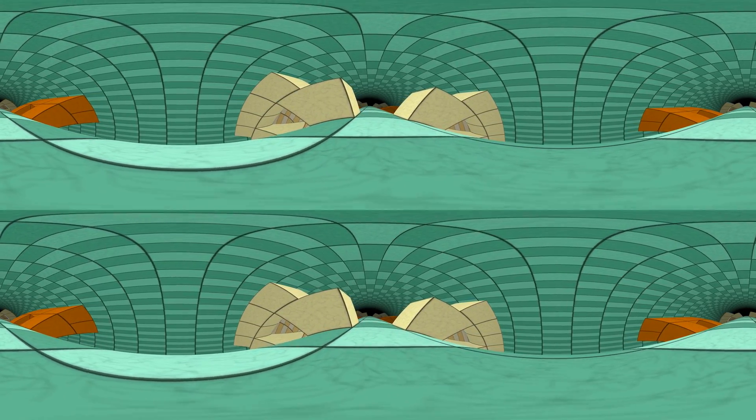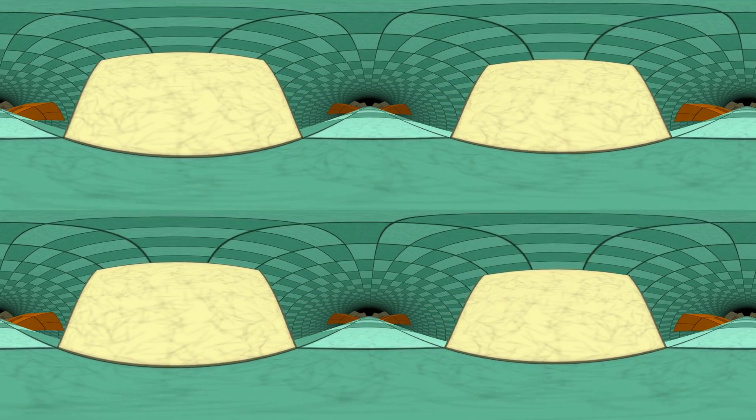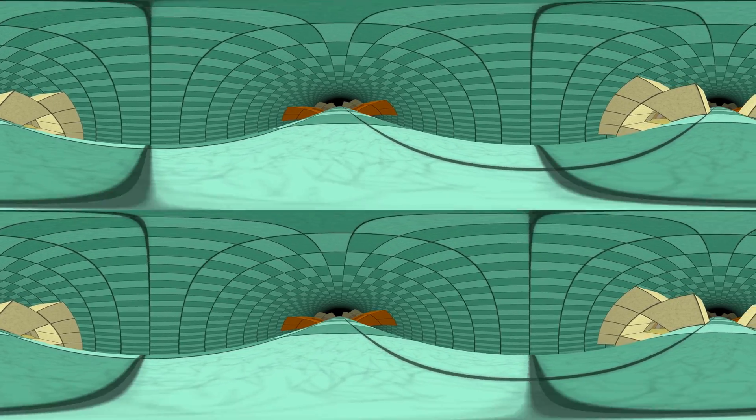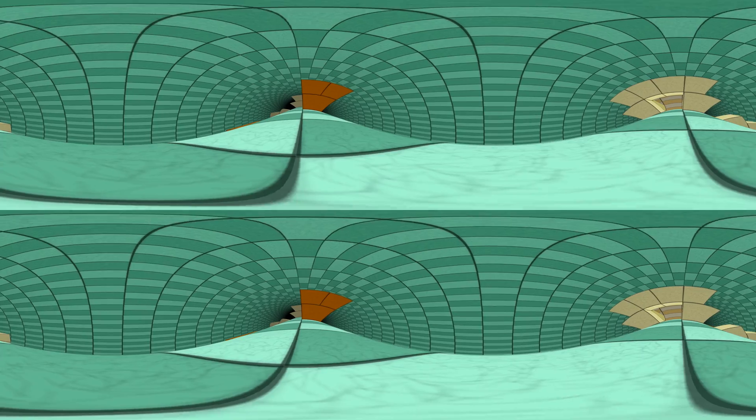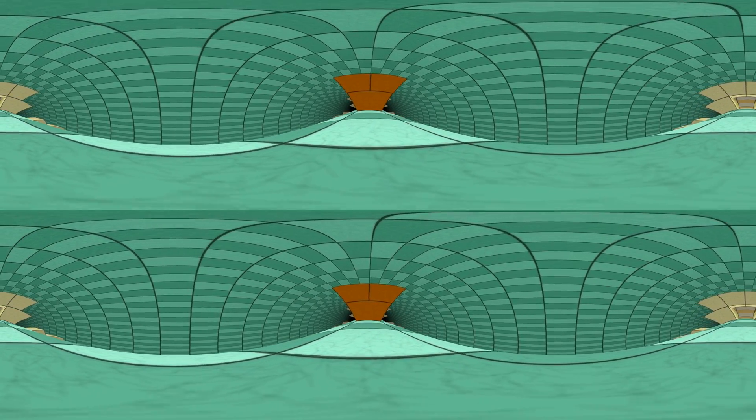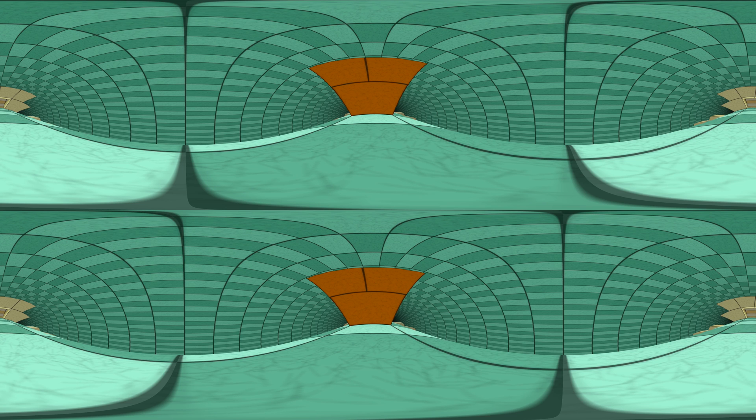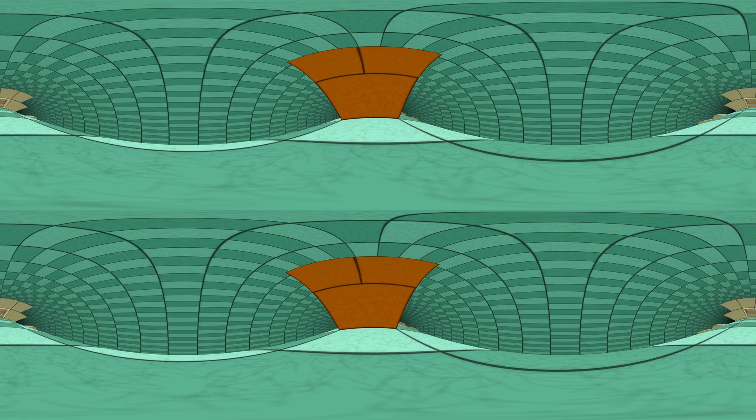Sorry, no pentagons this time. Have curved squares instead. Look at the side walls of these portals. They consist of three curved squares, each of which has two vertical edges and two curved edges.